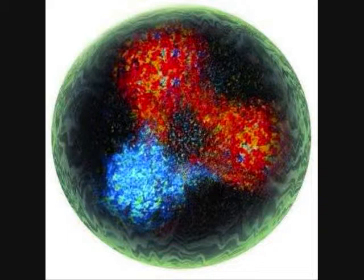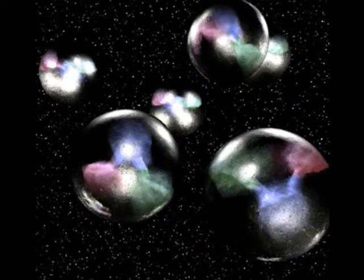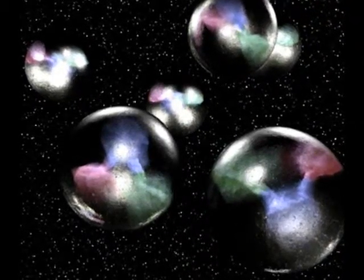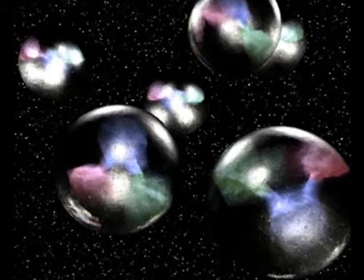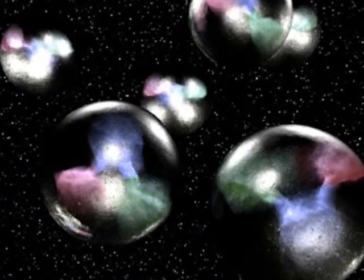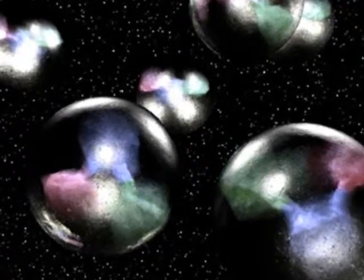But more interestingly, quarks cannot exist separately. That is to say, quarks cannot exist apart from the particles that they constitute. Now, a bunch of parts that cannot exist independently of the whole that they constitute are not really parts at all. The quarks, because they do not exist independently of the whole that they supposedly constitute, fail to satisfy the independence criterion in addition to failing the criterion of permanence for an atomistic framework.